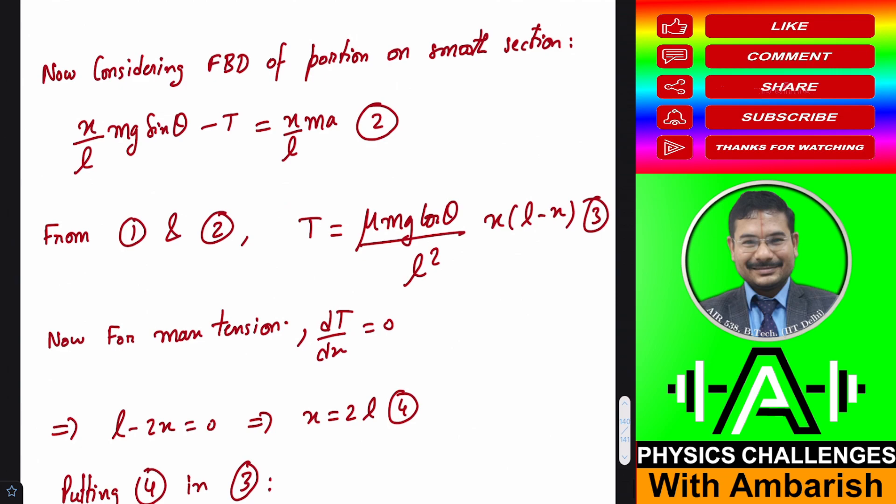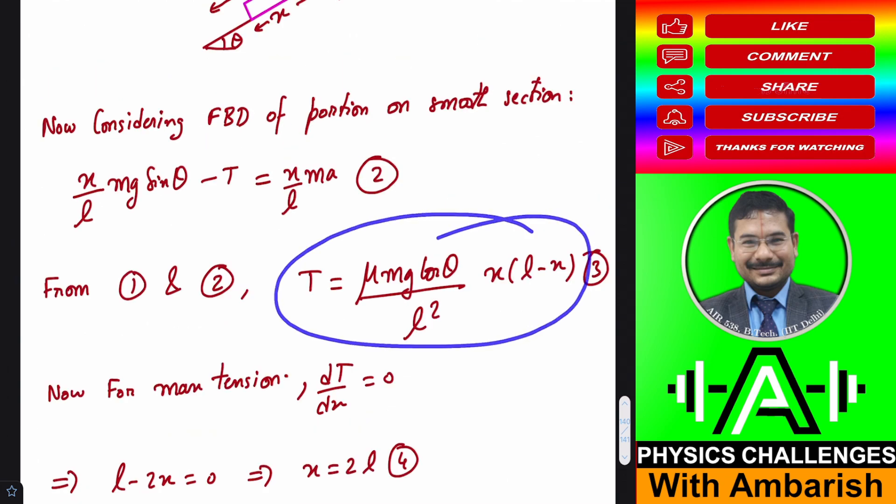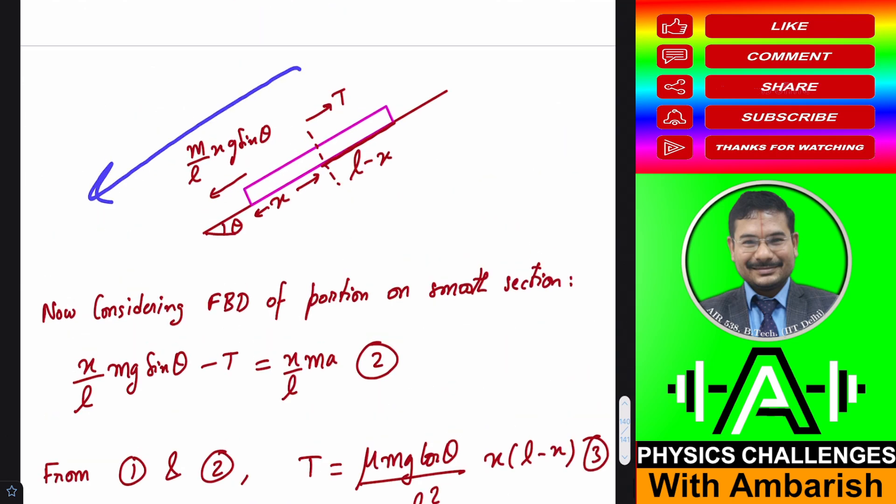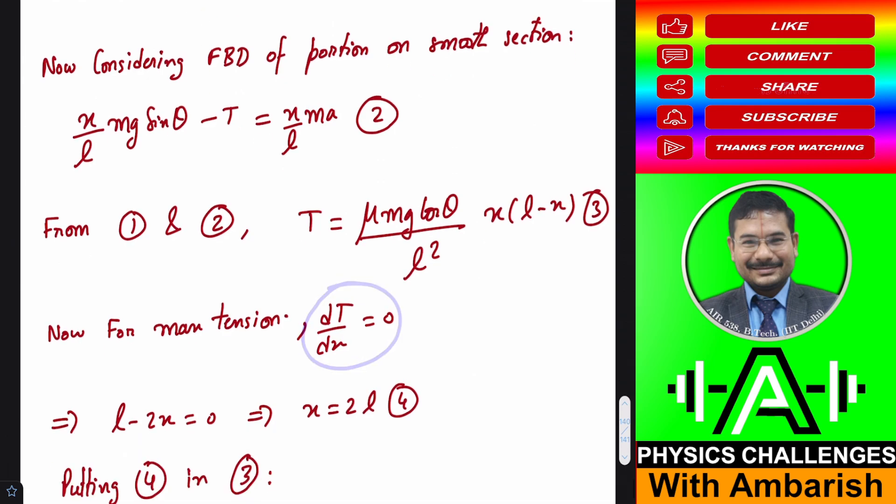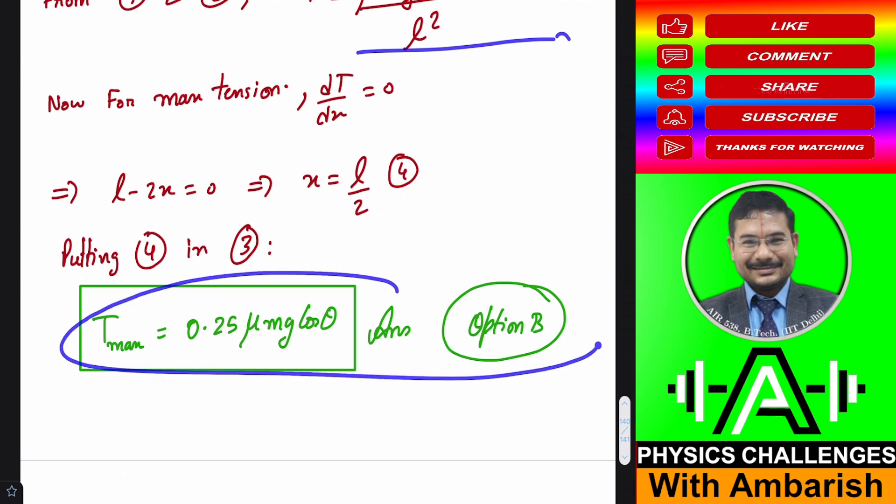So I've solved for tension, which comes out to be mu MG cos theta by L squared into X into (L minus X). Now this is a function of X, and as the bar slides down, X varies with time. To find the maximum tension, I differentiate this with respect to X and put that equal to 0. For maximum tension, dT/dX equals 0, which gives us X equals L by 2. Putting that value, we get 0.25 mu MG cos theta.